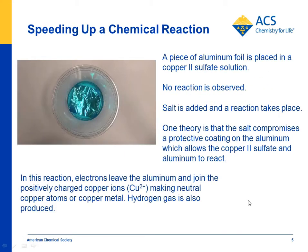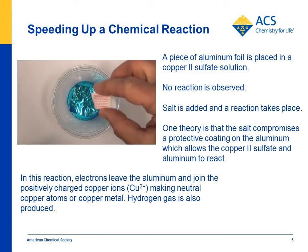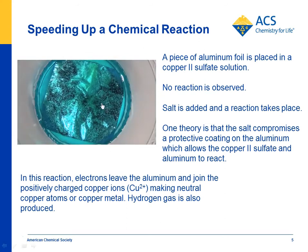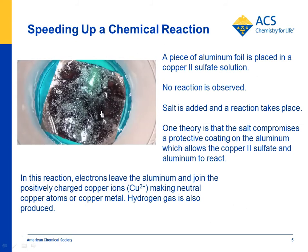In the extend part of the lesson, students put a piece of aluminum foil in a copper sulfate solution and nothing happens. But they add a little salt, and things begin to happen. The salt acts as a type of catalyst — one theory is that it helps degrade the coating on the aluminum foil, allowing the copper sulfate to react with the aluminum. Electrons from the aluminum combine with the copper ion, and you end up getting actual elemental copper forming. It's also exothermic, and some hydrogen gas is produced.